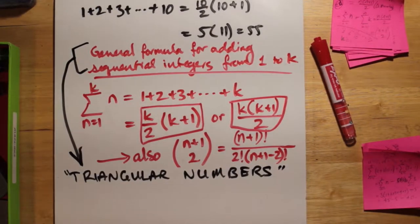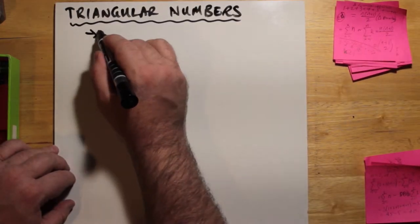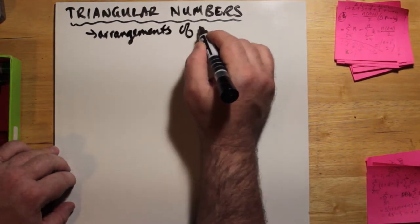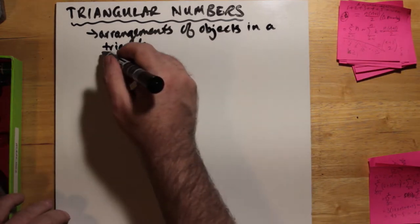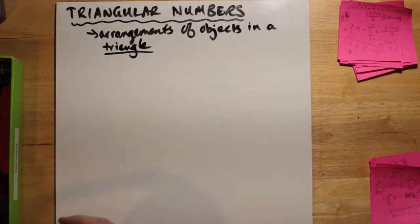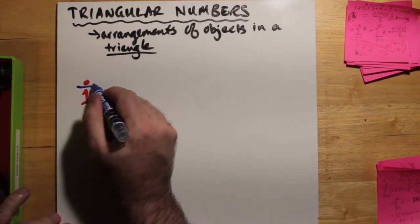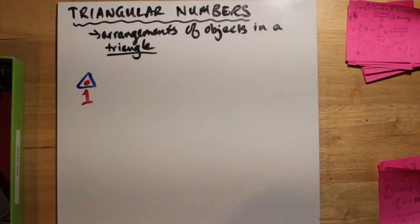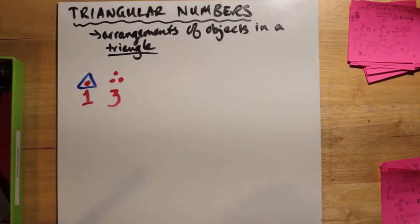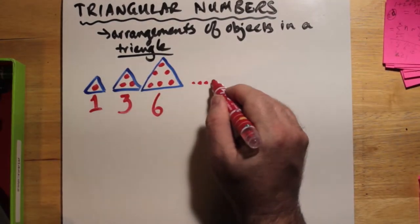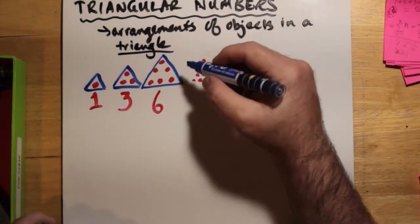1 is a triangular number. 1 plus 2, 1 plus 2 plus 3, 1 plus 2 plus 3 plus 4. These are all triangular numbers. What do they have to do with? Well, they have to do with arrangements of objects in a triangle, regularly spaced. So just to illustrate, I have here 1. Well, 1 fits in a triangle quite nicely. What would be another number? Well, 2 doesn't go so well, but 3 does, right? 3 objects can be arranged in a triangle, so can 6. And if we add a fourth row with 4 dots, we have 10. And notice we have 1 plus 2 plus 3 plus 4, and that makes 10. That's the next one.